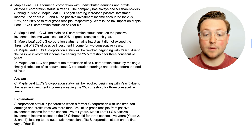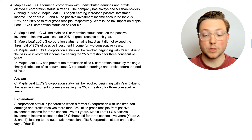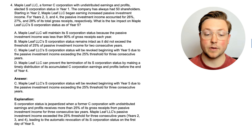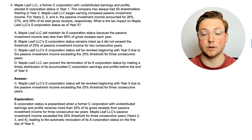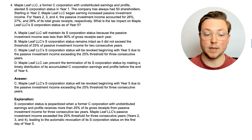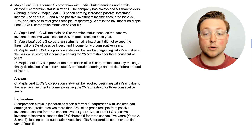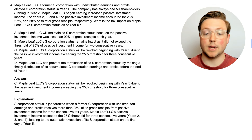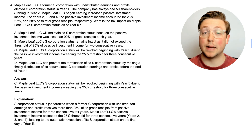The answer is that their status will be revoked as of the beginning of year five. S-corporation status is jeopardized when a former C-corporation with undistributed earnings and profits receives more than 25% of its gross receipts from passive investment income for three consecutive tax years. Maple Leaf LLC's passive investment income exceeded the 25% threshold for three consecutive years — 26%, 27%, 28% in years two, three, and four — leading to the automatic revocation of its S-corporation status on the first day of year five. This is a unique situation: even if they're meeting all the other requirements, if they were a former C-corporation with undistributed earnings and profits, and for three consecutive years more than 25% of their income was from passive activity income, that will revoke their S-corporation status.